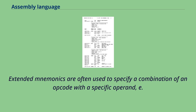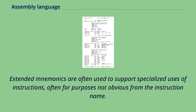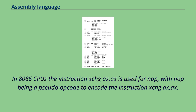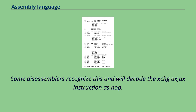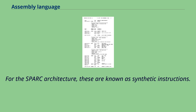Extended mnemonics are often used to specify a combination of an opcode with a specific operand. For example, the system/360 assemblers use B as an extended mnemonic for BC with a mask of 15, and NOP for BC with a mask of zero. Extended mnemonics are often used to support specialized uses of instructions, often for purposes not obvious from the instruction name. For example, many CPUs do not have an explicit NOP instruction, but do have instructions that can be used for the purpose. In 8086 CPUs, the instruction XCHG AX,AX is used for NOP, with NOP being a pseudo-opcode to encode the instruction XCHG AX,AX. For the SPARC architecture, these are known as synthetic instructions.